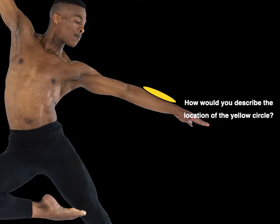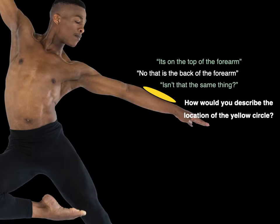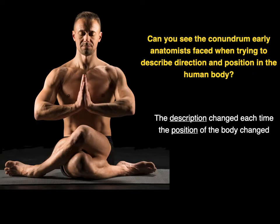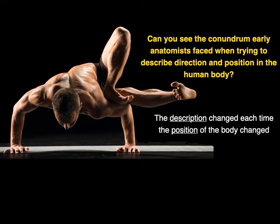How would you describe the location of the yellow circle? It's on the top of the forearm. That's the back of the forearm. Can you see the conundrum early anatomists faced when trying to describe direction and position in the human body? The description changed each time the position of the body changed.